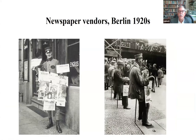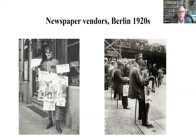Moving quickly along — Biberkopf sold newspapers. There were about 150 daily newspapers in Berlin at the time. Here you've got what the vendors looked like; there were vendors all over town. Competition was hard, so it was a rough job trying to sell your newspapers to customers.